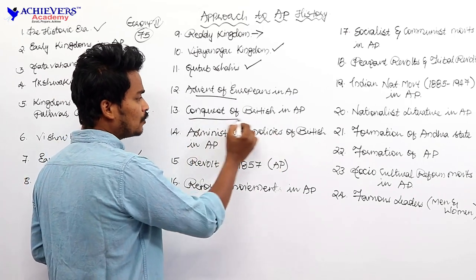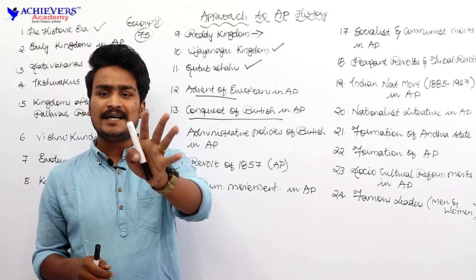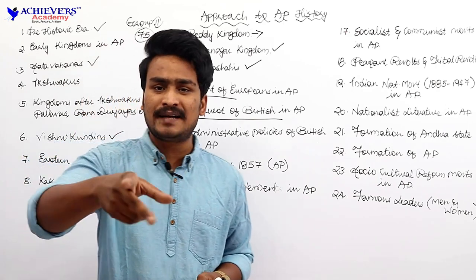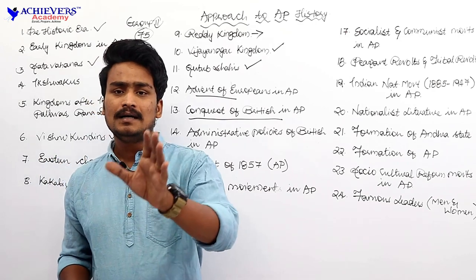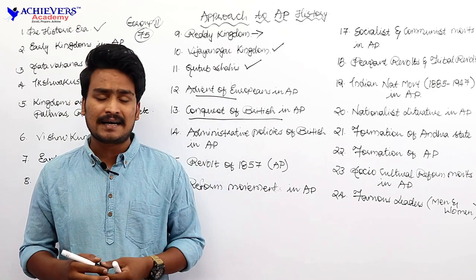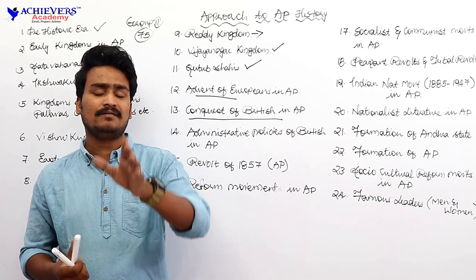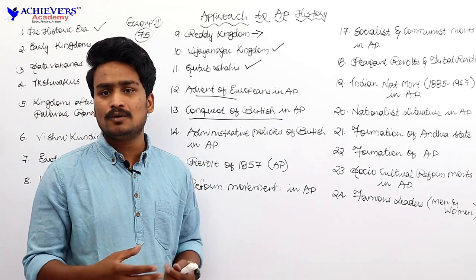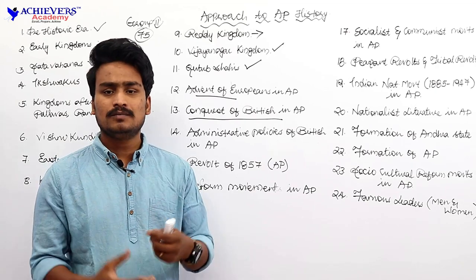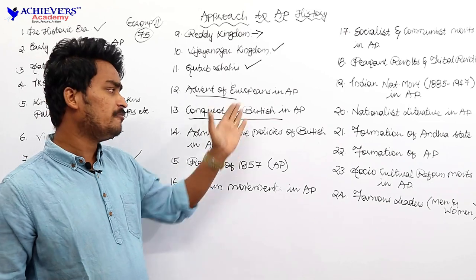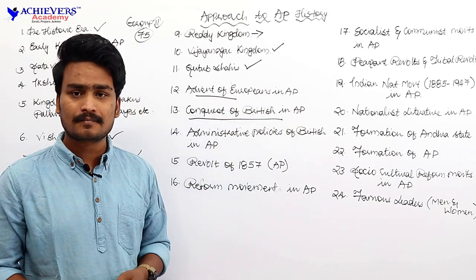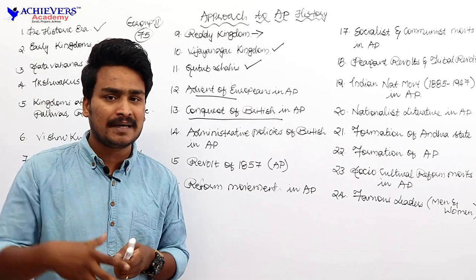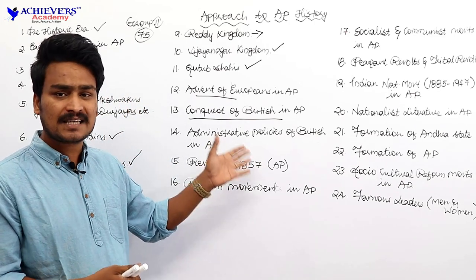The next chapter would be the conquest of British in Andhra Pradesh. The majority of the Andhra region was under the occupation of British. There were wars between British and French — those are called Carnatic Wars. In the context of Carnatic Wars, there is an important battle related to Andhra Pradesh history — the Bobbili battle. British eliminated other European powers, especially French, from Andhra Pradesh.